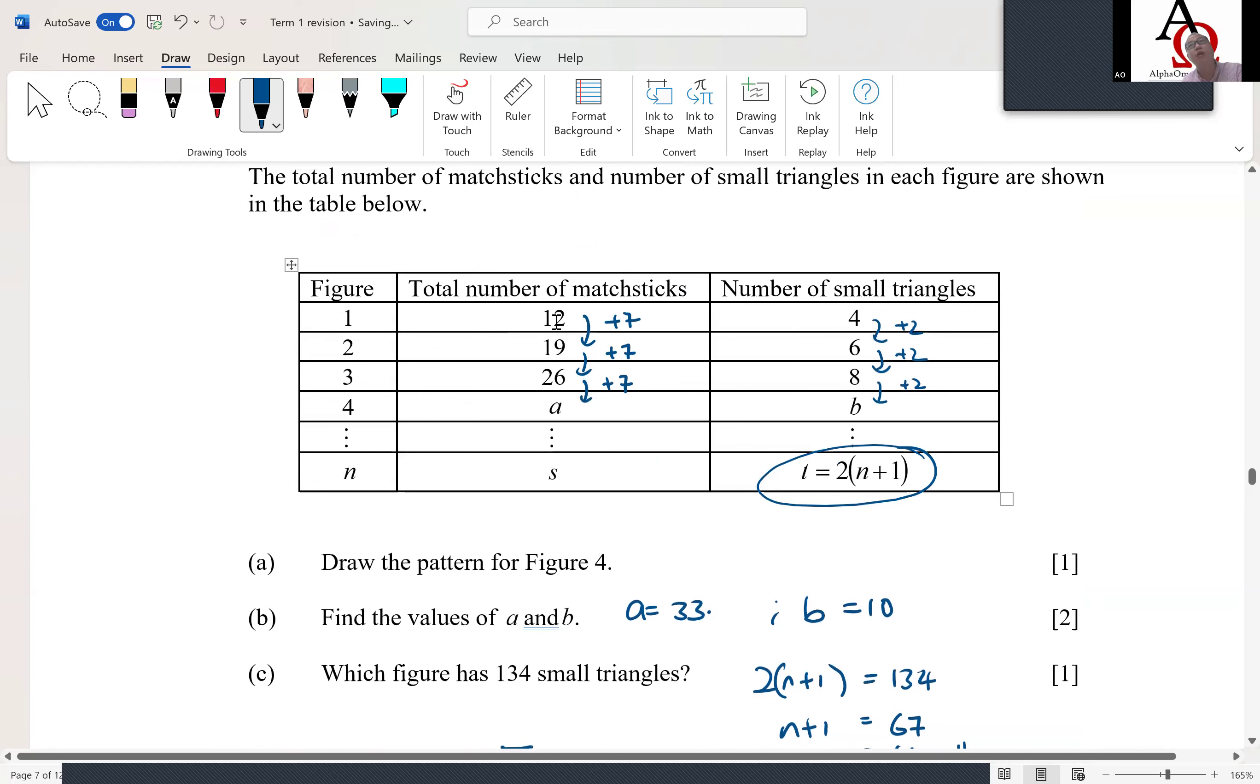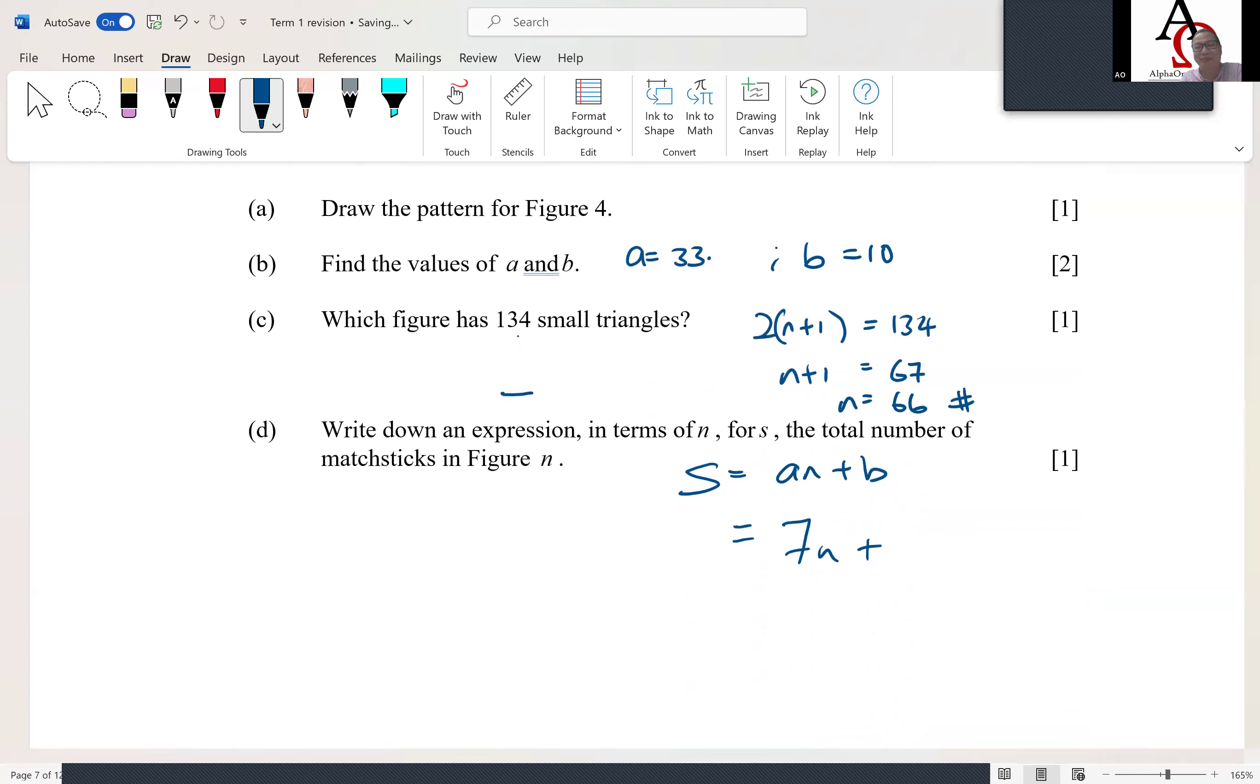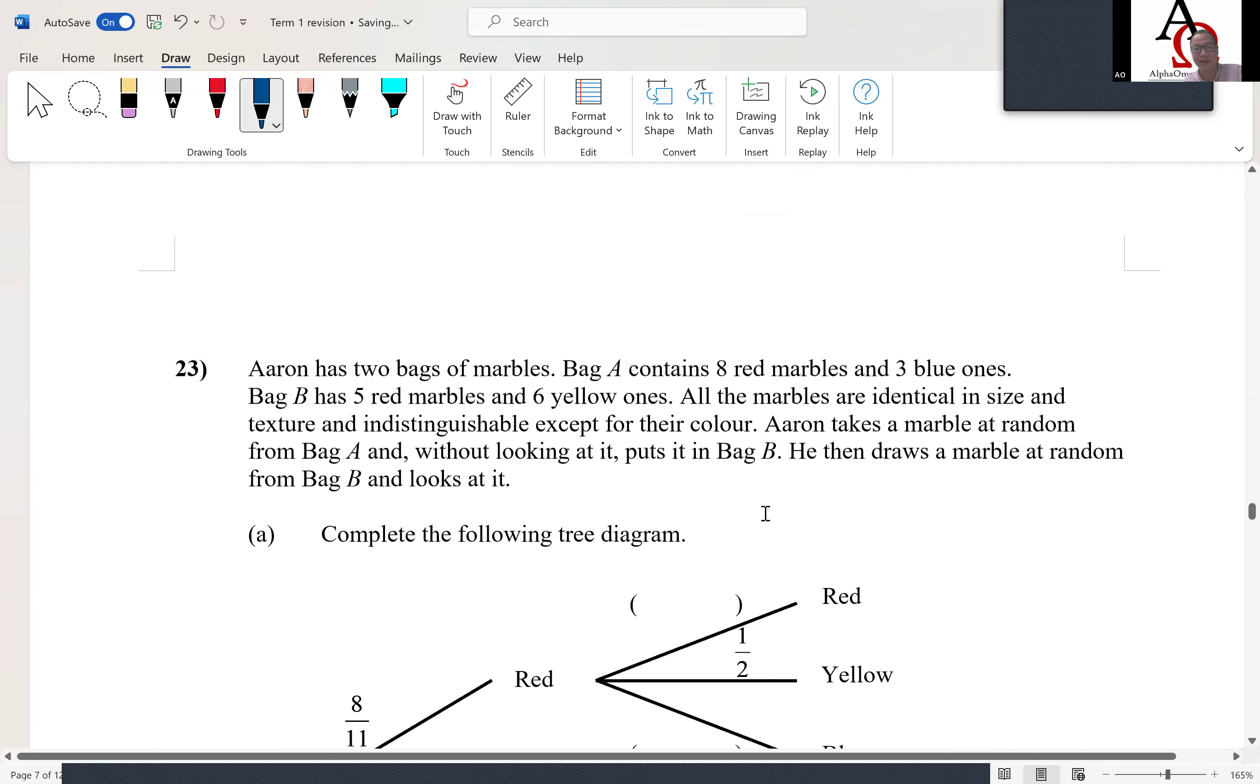So the value before 12 would be 5, so it's 7n + 5. Okay, so very useful, this formula an + b.